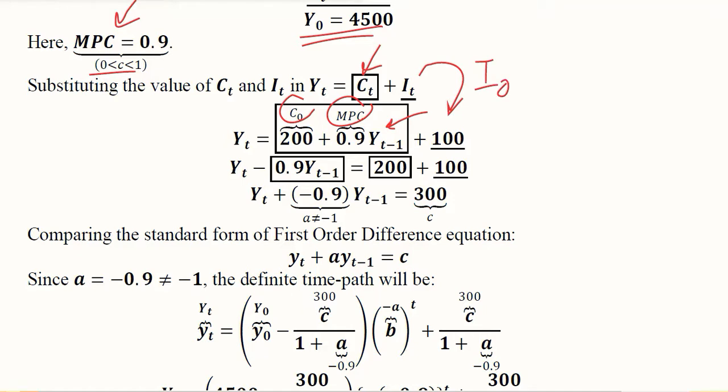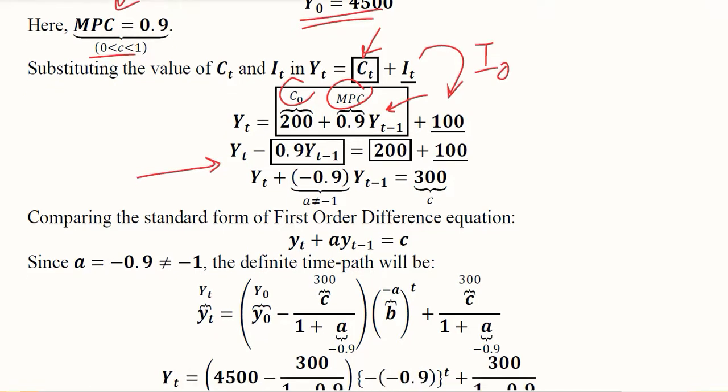Then we have the substitution and then solution. These simple algebraic steps guide us that we will have 300 on the right-hand side, giving us the constant of the first-order difference equation.